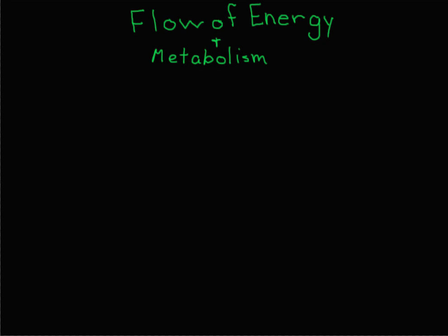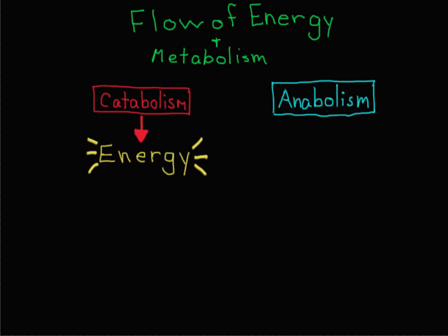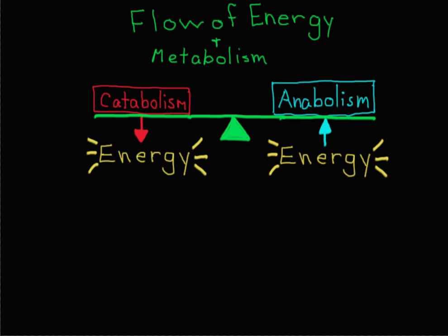The metabolism that occurs in our body and in living organisms is really a flow of energy. Catabolism, the process of breaking molecules down, releases energy that can be used to do work, while anabolism, the process of synthesizing molecules, requires the input of energy. These two processes are in balance, so it's the flow of energy that determines the balance of metabolism.